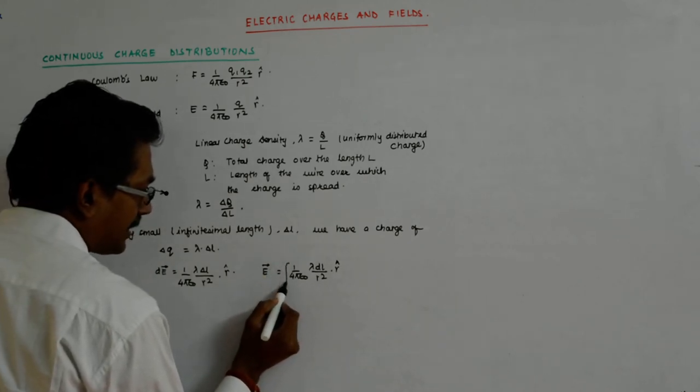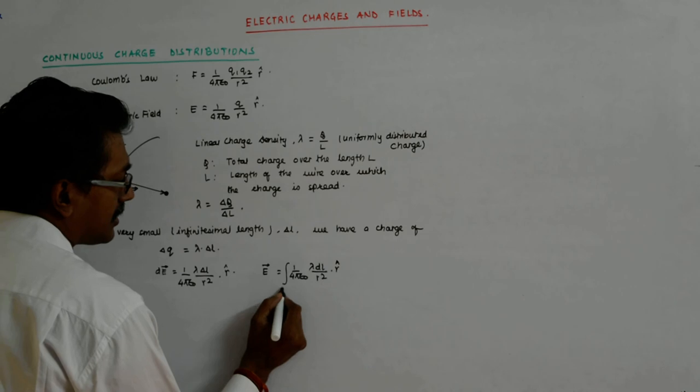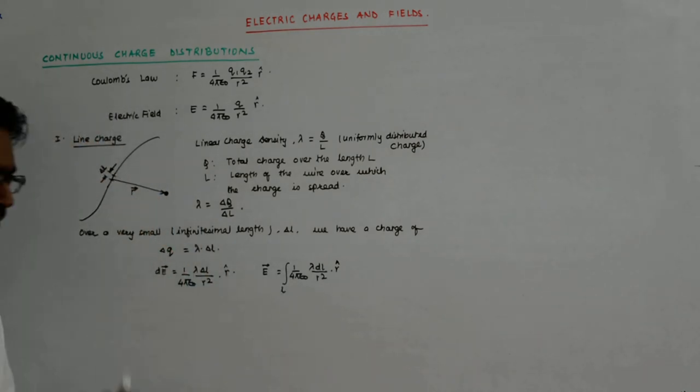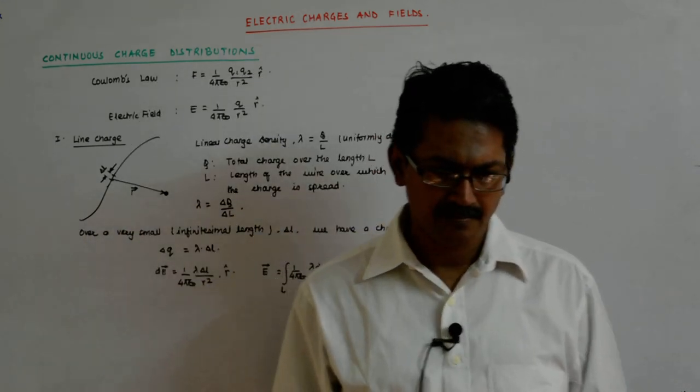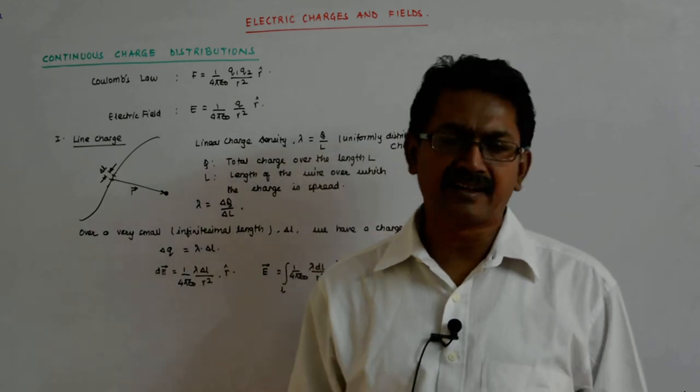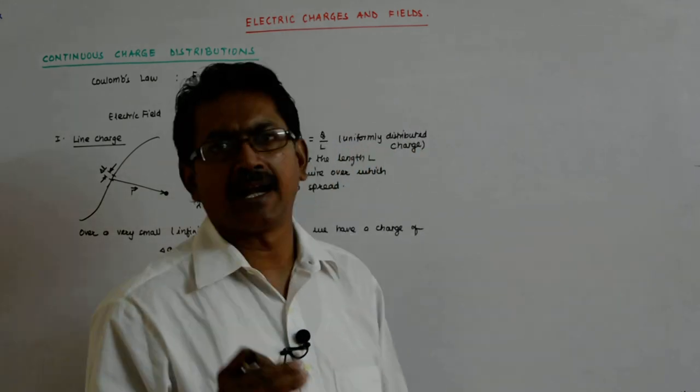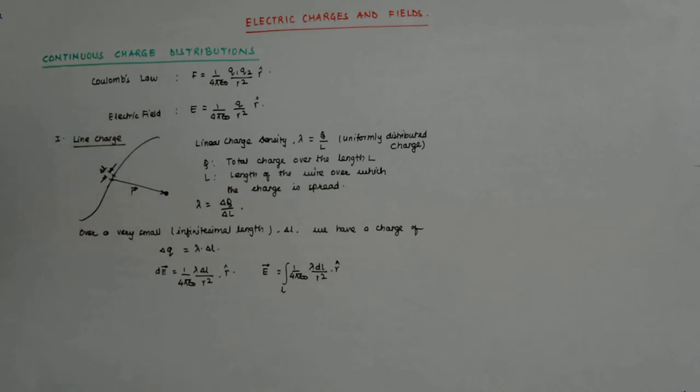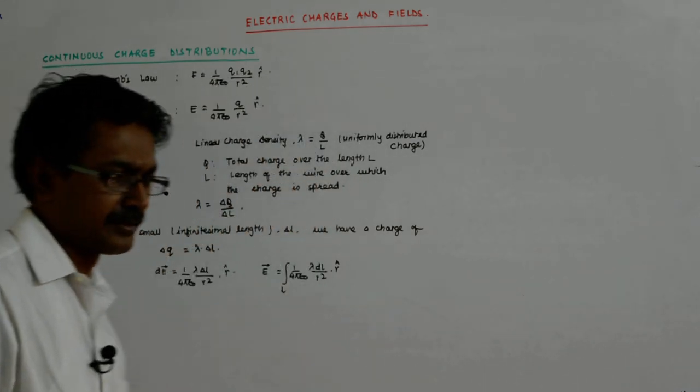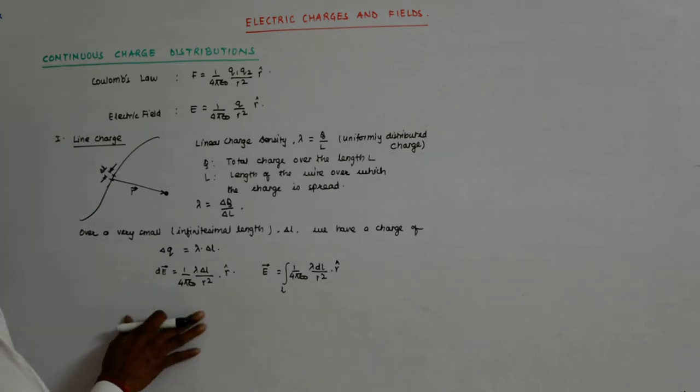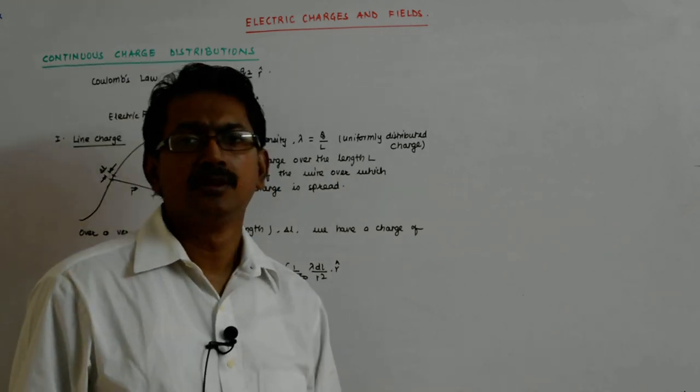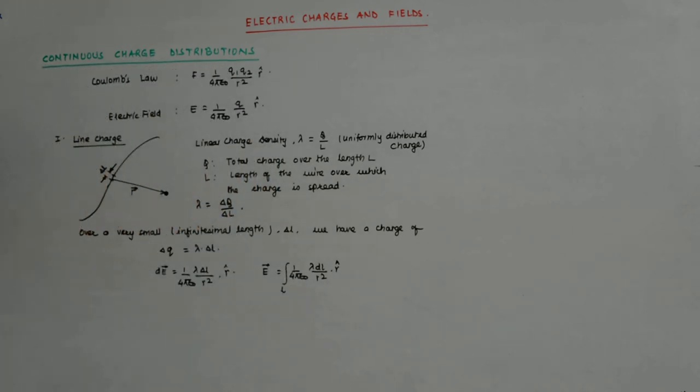So for this, you'll have to integrate it over the length, over the whole curve which is creating a field out there. And this will require some integration, and I'll physically do that at one point of time. When we have discussed the Gauss's law, then for a limited length of wire I'll actually be doing that. So this is how you tackle a line charge, a continuous distribution of a line charge.